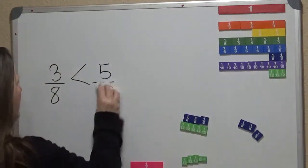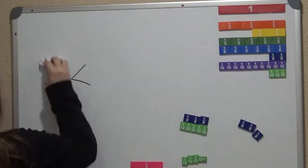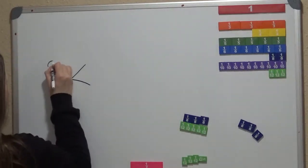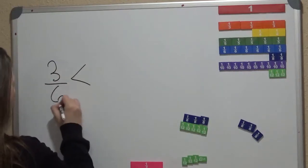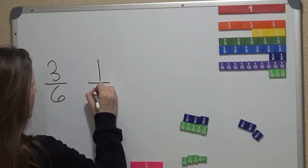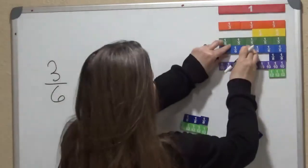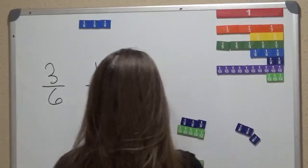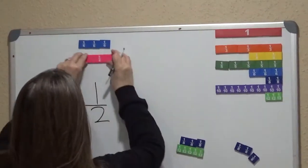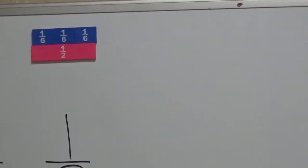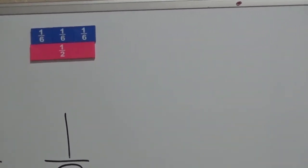So what about 3 sixths and 1 half. So I'm going to bring the 3 sixths up, and then we're going to do the 1 half. Oh, wait a second. What do you notice there? They're the same amount.